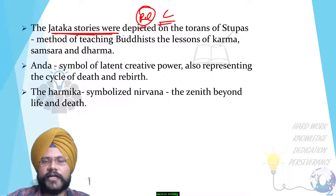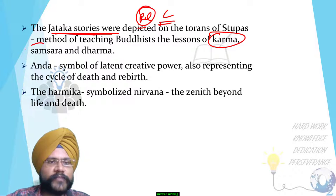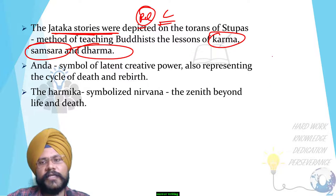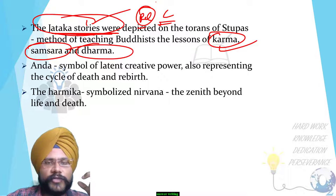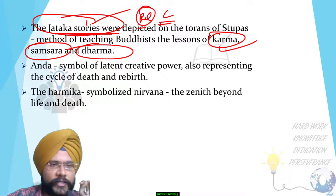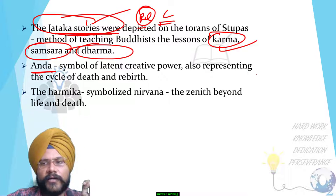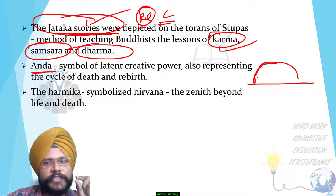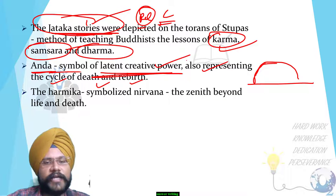So what are the symbols and how they are related to religion and culture? First is the Jataka stories. Jataka stories teach the lessons of karma, samsara, and dharma — these three religious and cultural values are represented in symbolic form. The shape of the stupa is also in the shape of an anda — a hemispherical shape — which is a symbol of the latent creative power and also represents the cycle of death and rebirth.